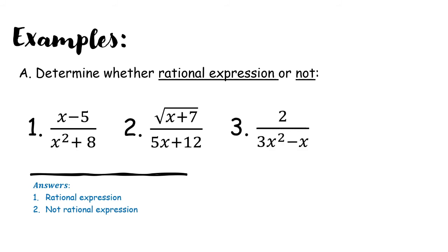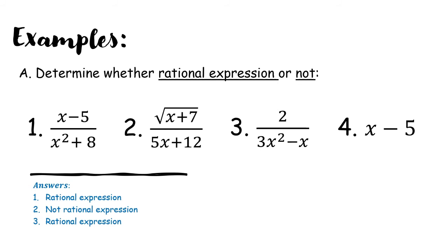Number 3: 2 all over 3x squared minus x. The value 2 is a constant, considered a polynomial of degree 0, and 3x squared minus x is also a polynomial. Therefore, number 3 is a rational expression. Number 4: x minus 5. Although there is no visible denominator, in mathematics we have an imaginary denominator of 1, so x minus 5 over 1, where 1 is a polynomial of degree 0. Therefore, number 4 is also a rational expression.